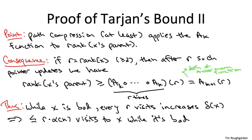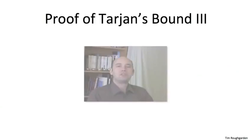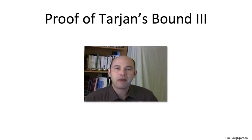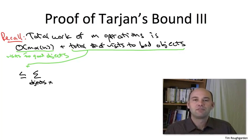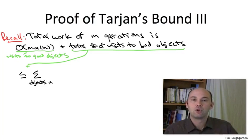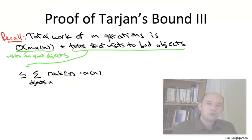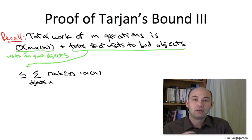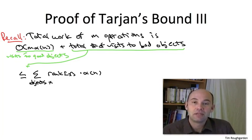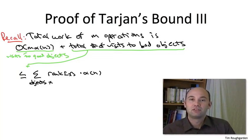So now we've done all the hard work — we just need one final slide putting it all together. To bound the total number of visits to bad objects over the entire sequence: for a bad object X with rank R, the total number of times it's visited while bad is bounded above by R · α(N). Summing over all objects gives our initial bound on total visits to bad objects. We have to be careful here because there are N objects and ranks can be as large as log N. A naive bound gives something like N · log N · α(N), and that's not what we want — we really want N · α(N). So we need to use the fact that not all nodes can have big rank, which is exactly what the rank lemma says.